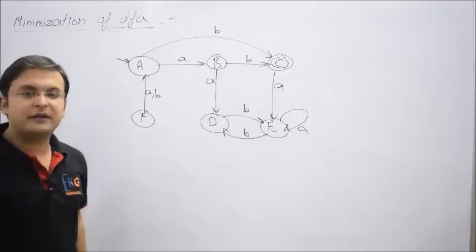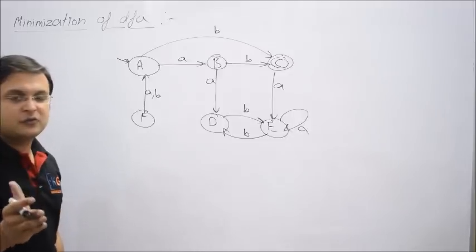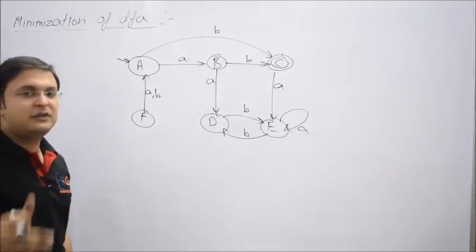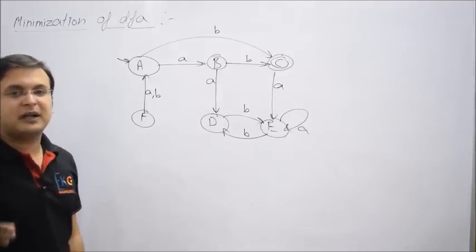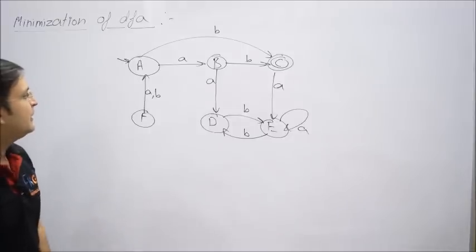What is the definition of a dead state? It directly says: if you reach that state, you cannot reach the final state. So you can check out one by one.